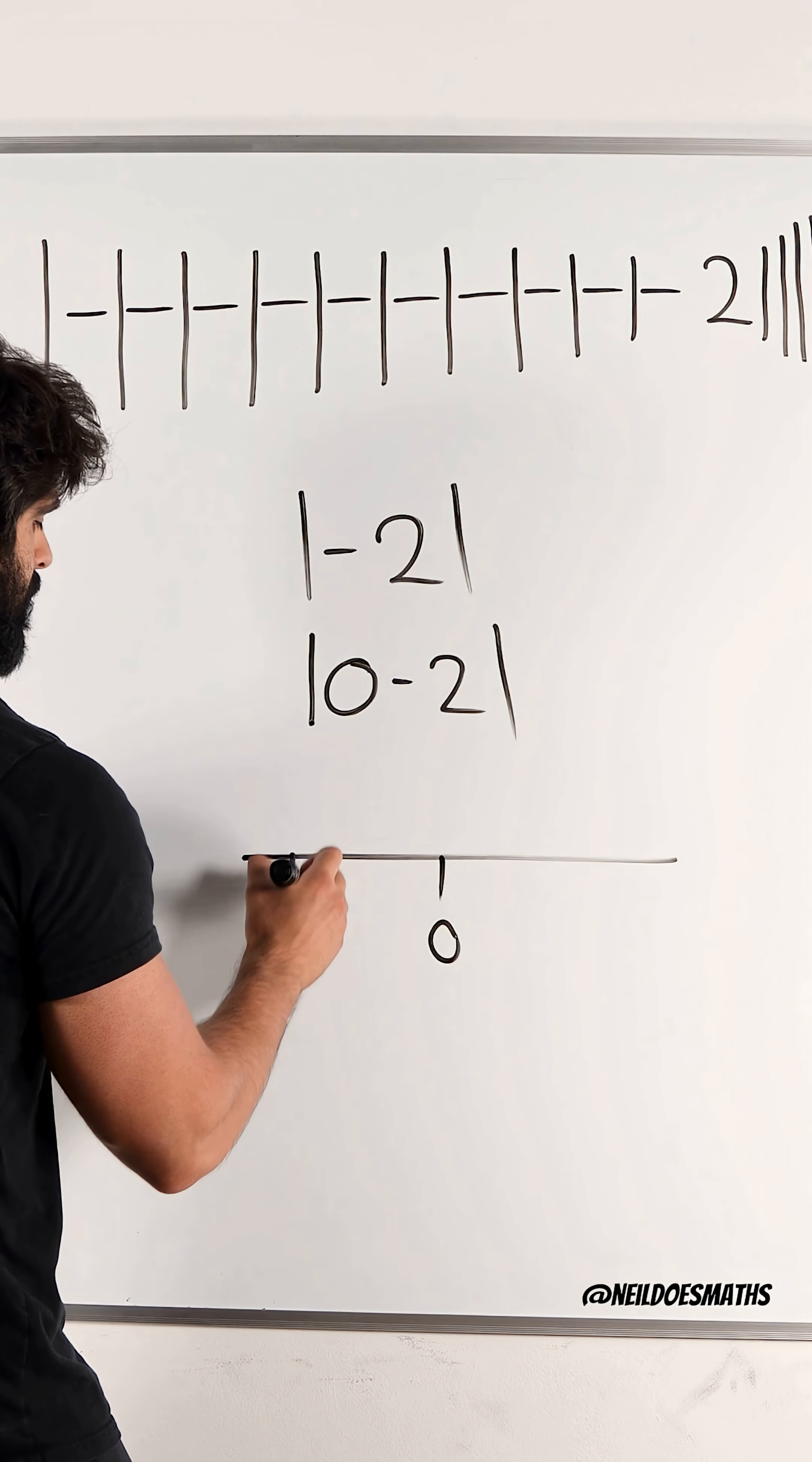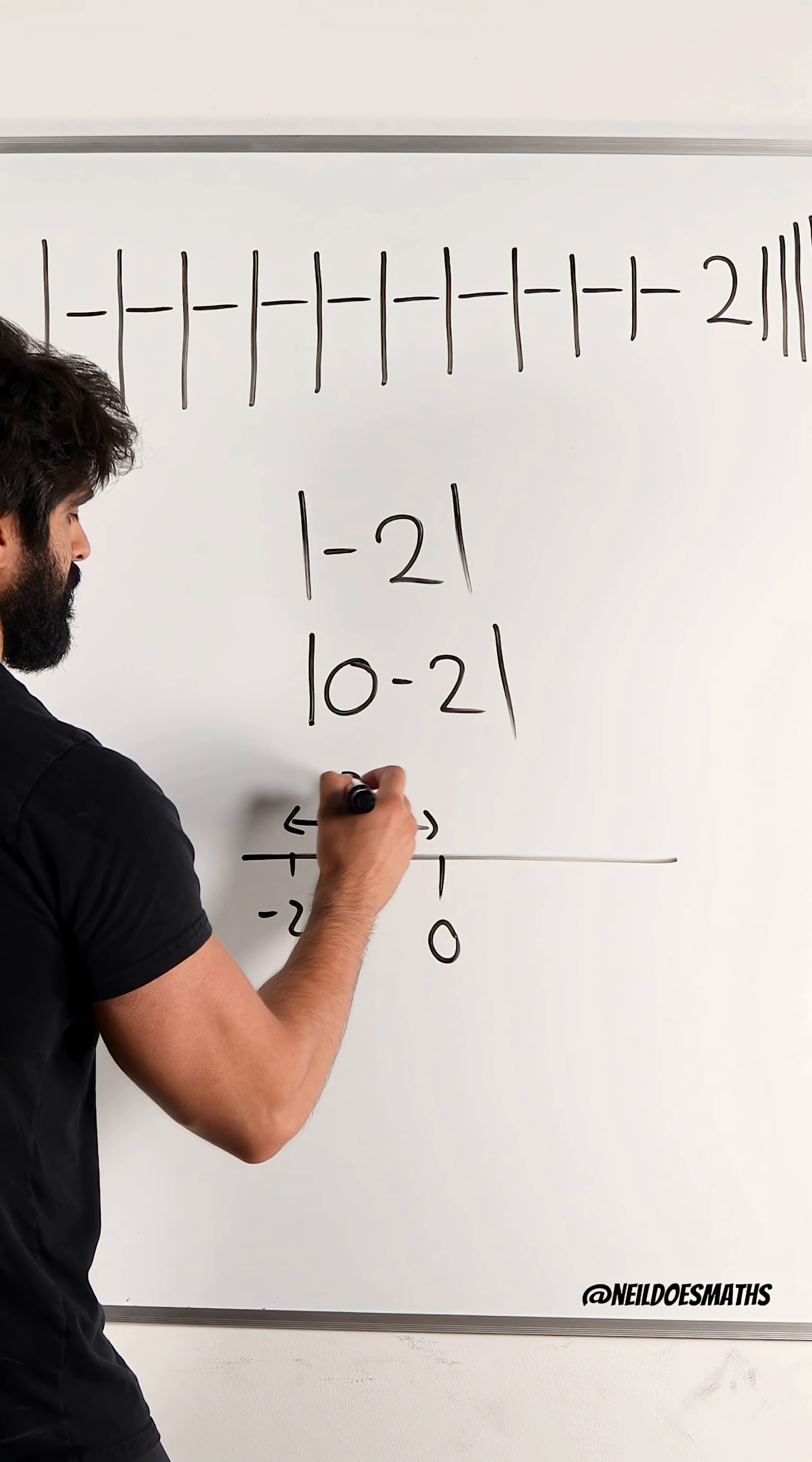Well, obviously, if you have a number line, here's 0, here's minus 2, the distance is 2.